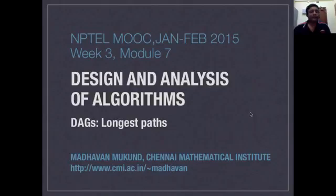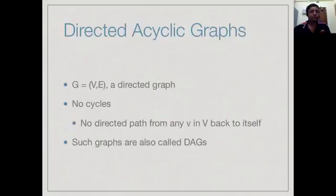Let us continue to look at DAGs. In this section we will look at a different problem called identifying the longest path in a DAG. Recall that a directed acyclic graph is just a directed graph in which there is no directed path from any vertex back to itself — so it is directed and it is acyclic.